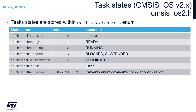Task states are coded within the osThreadState_t enumeration. In the table we can see the coding of each state with its value: thread inactive, ready, running, blocked, terminated — also mentioned as deleted. There is also a thread error state in case of an error with the task, and there is a reserved field as well.